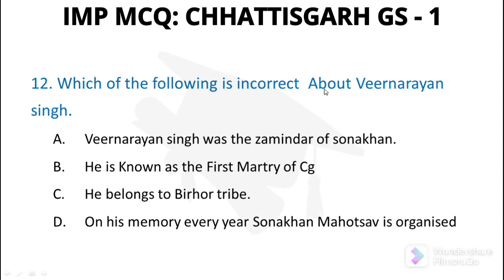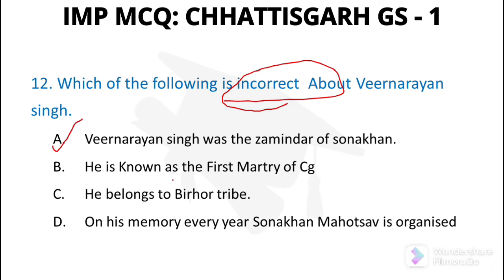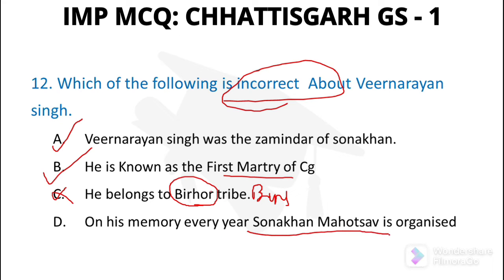Question number 12: Which of the following is incorrect about Veer Narayan Singh? Veer Narayan Singh was the sovereign of Sonakhan — this is correct. He is known as the first martyr of Chhattisgarh. He belongs to Binjhwar tribe, not Birho tribe — this is the incorrect statement. On his memory, every year Sonakhan Mahotsav is organised. So option C is incorrect.